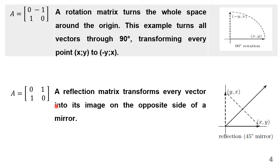We take the third case. A reflection matrix transforms every vector into its image on the opposite side of a mirror. We take the vector (x, y). When we multiply this, we get the answer as (y, x). So whatever we had as (x, y) will turn out to be (y, x). For example, if I have a value (2, 1), then the answer is going to be (1, 2). So we get the reflection — it is called a 45-degree mirror.